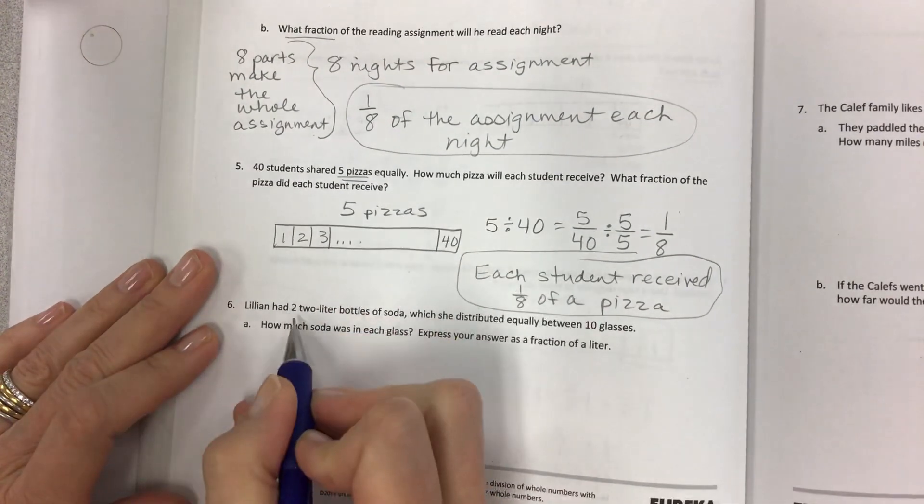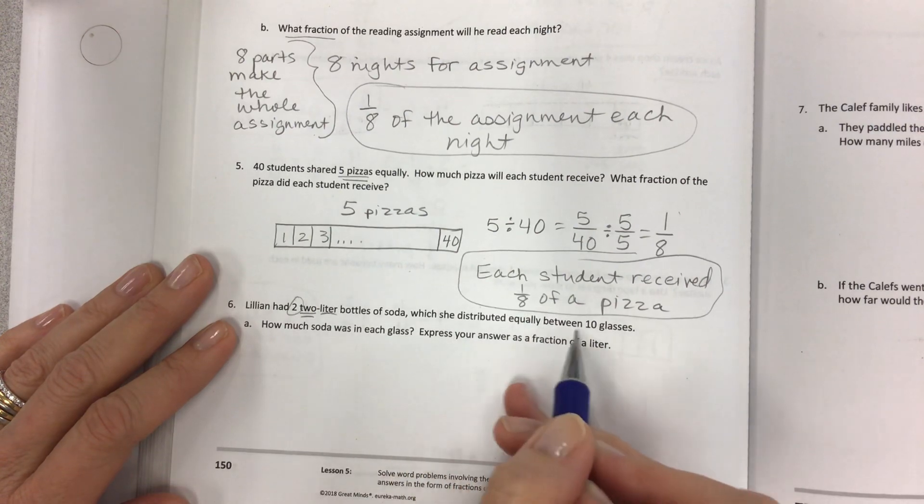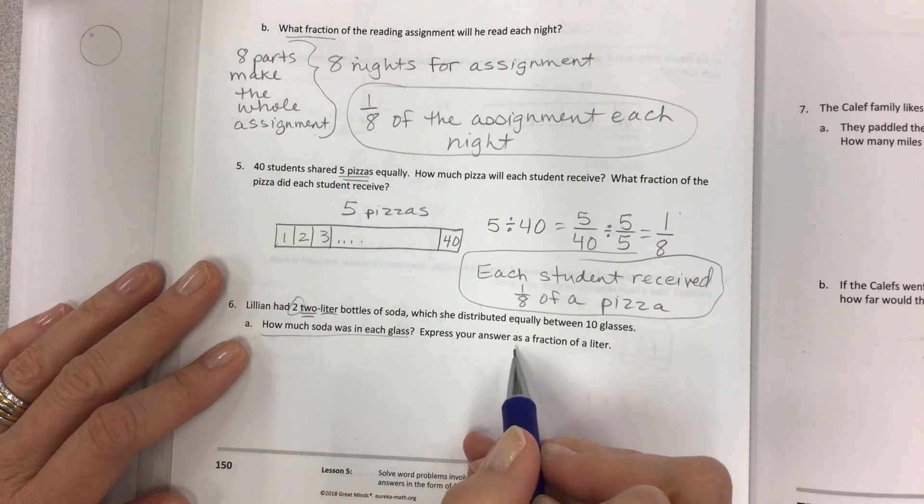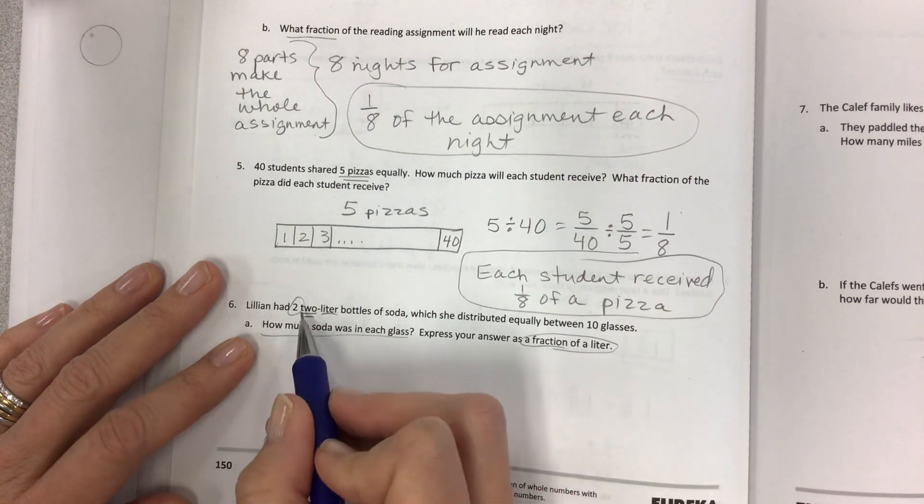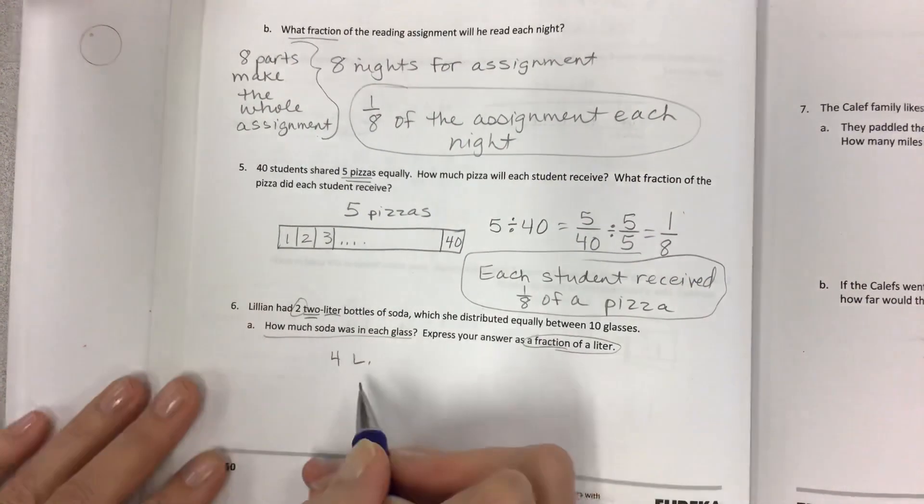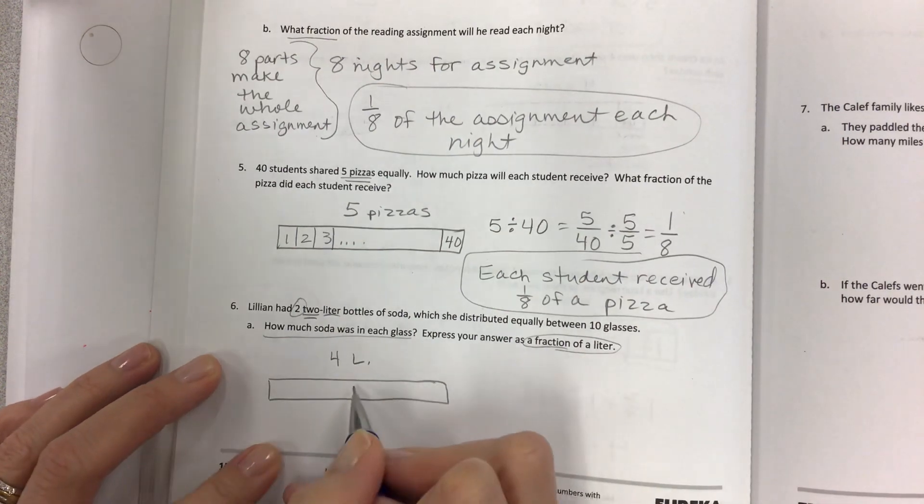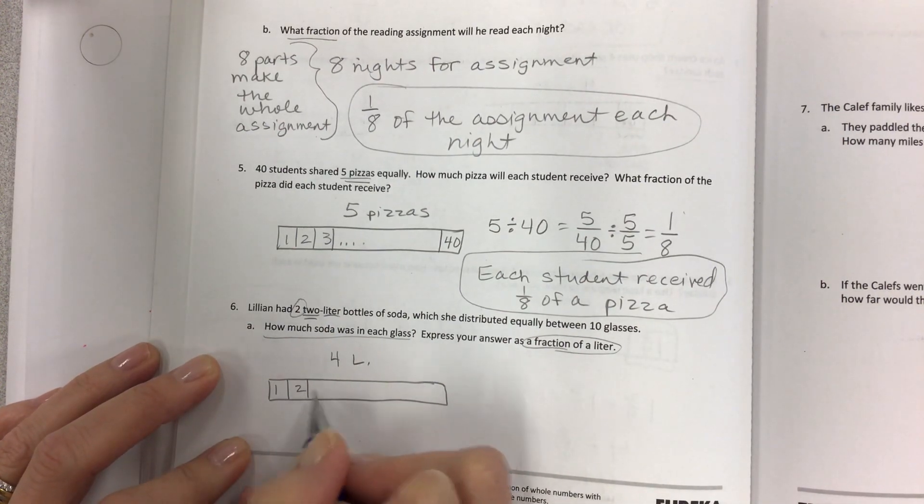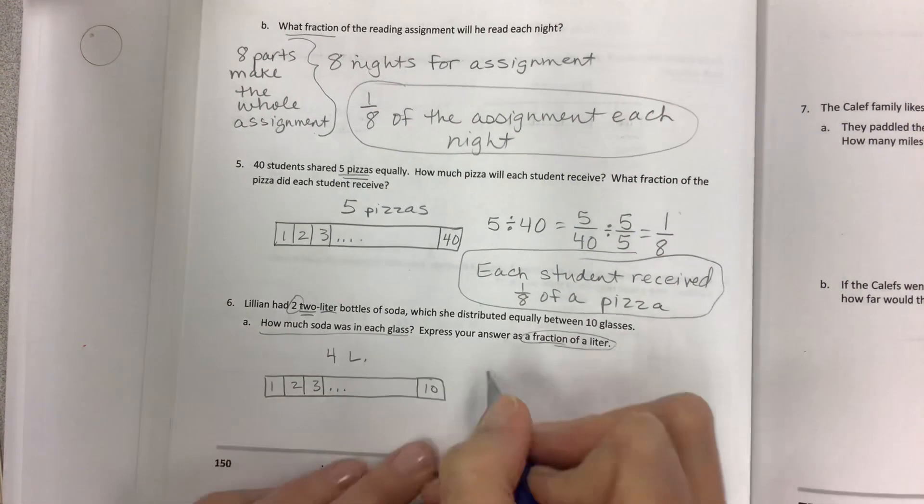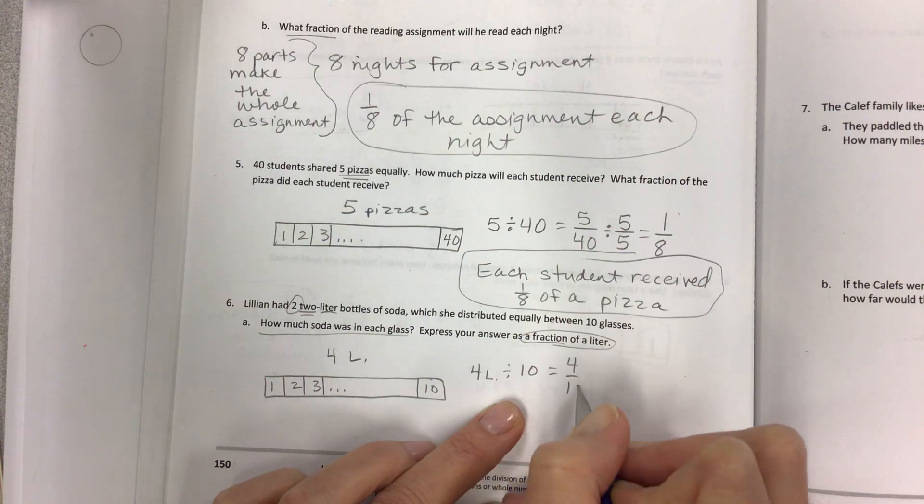Moving on to Lillian. Lillian had two, two liter bottles of soda, which she distributed equally between 10 glasses. How much soda was in each glass? And first express your answer as a fraction of a liter. So I don't want to do two, two liters. I want to have all the soda together. So I'm going to put four liters into my tape diagram. And then she has 10 glasses. And so again, I'm just going to do one, two, three, dot, dot, dot, all the glasses, 10 glasses.